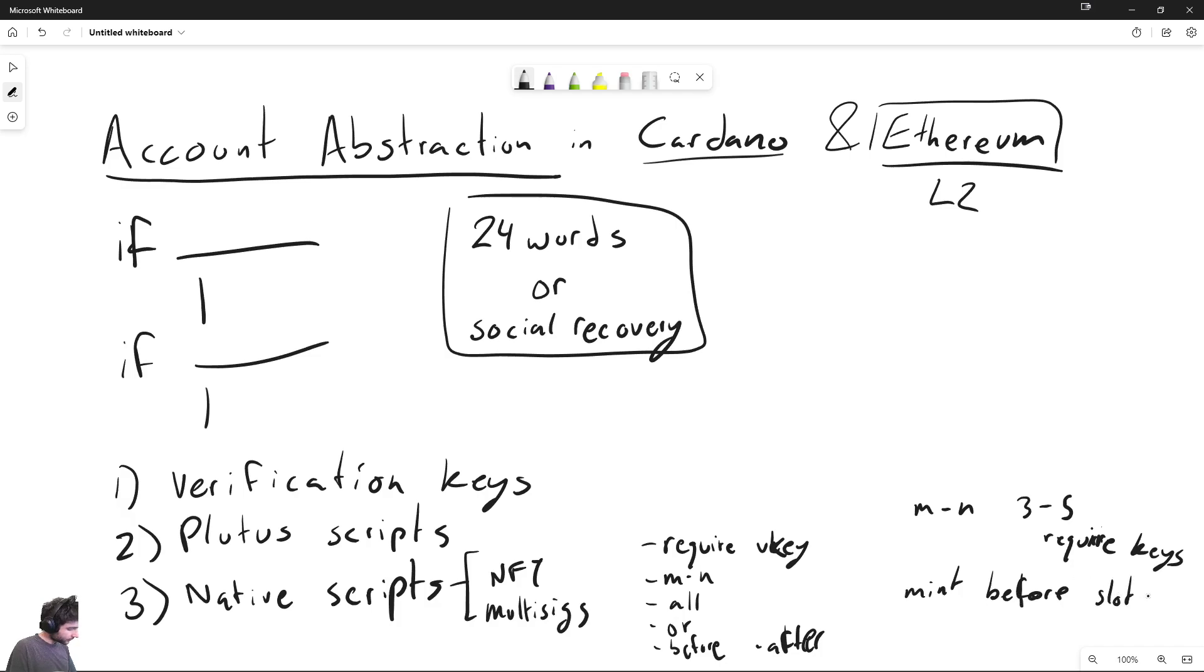And for NFTs, this is sufficient because you can say basically you can mint before slot number. So if you've ever seen like an NFT mint where it says like this NFT can be minted up until this specific slot in the Cardano blockchain, it's because they're using this functionality specifically.